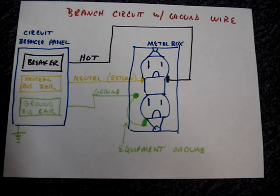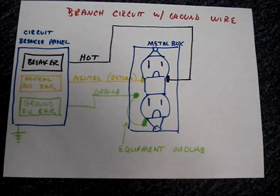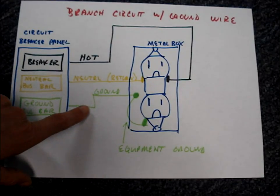To answer that question, let's look at a simple circuit that has one outlet. This circuit is correctly connected and it has a ground wire.